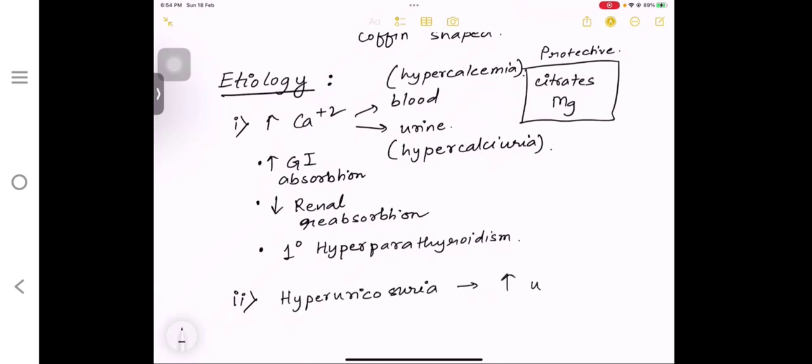Second is hyperuricosuria—more uric acid in your urine. This can happen when there is a catabolic state in the body like cancer or the patient is in chemotherapy, or if there is more consumption of dietary purines.